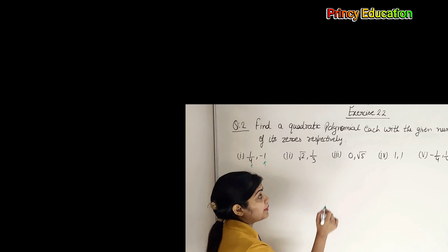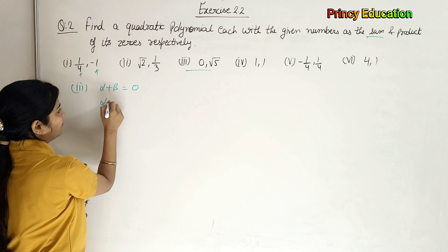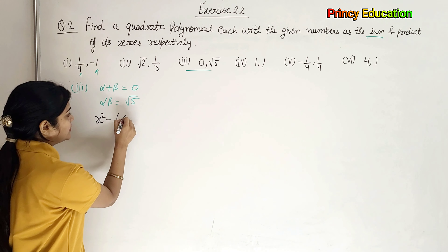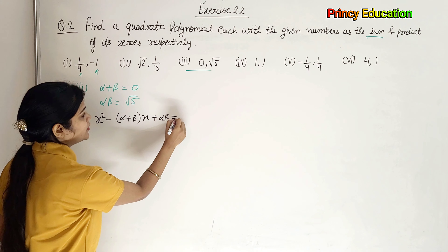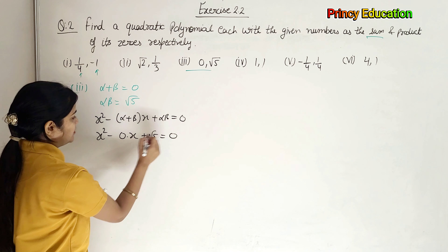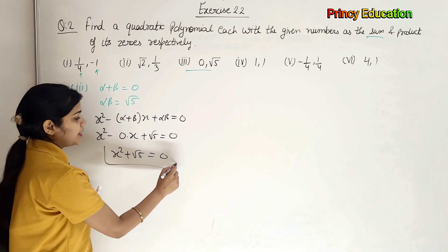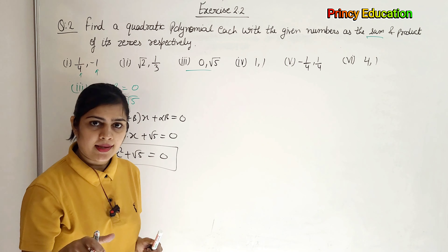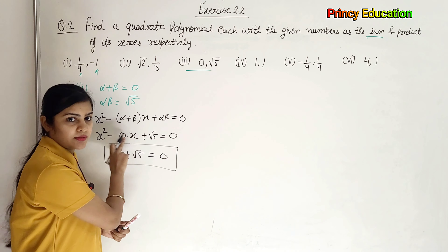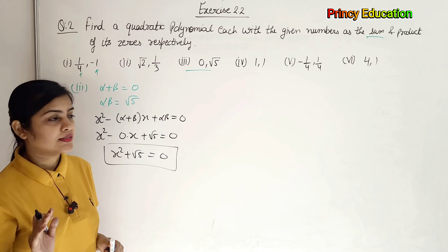Next, part 3. How much is alpha plus beta given? Zero. And how much is alpha times beta given? Root 5. So the equation is: x squared minus (alpha plus beta)x plus alpha beta equals zero. Putting values: x squared minus 0 times x plus root 5 equals zero. Since 0 times x gives zero, this simplifies to x squared plus root 5 equals zero. This is your equation, because the highest power is 2 — it is a quadratic equation.